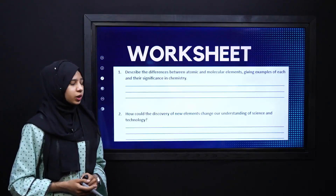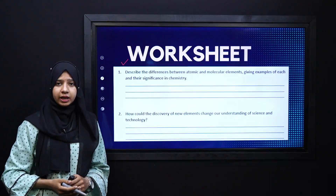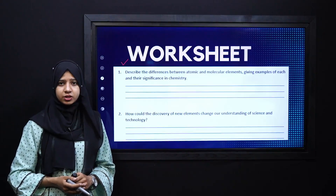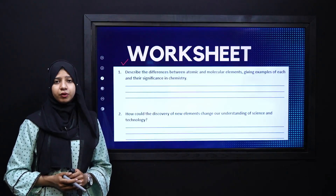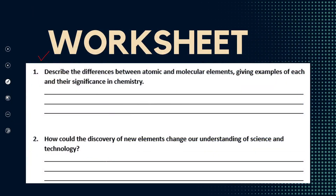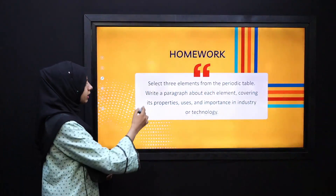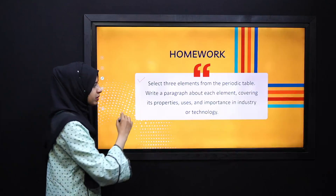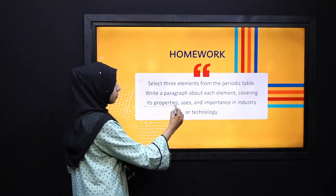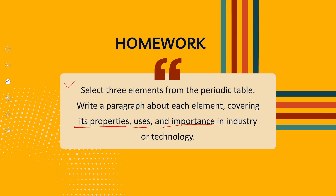Using this knowledge, we will now solve a worksheet. This worksheet will be available in the video description. Please pause your video for a few seconds and quickly solve this worksheet. For homework, select three elements from the periodic table and write a paragraph about each element covering its properties, uses, and importance in industry and technology.